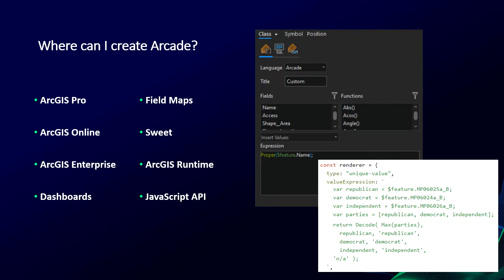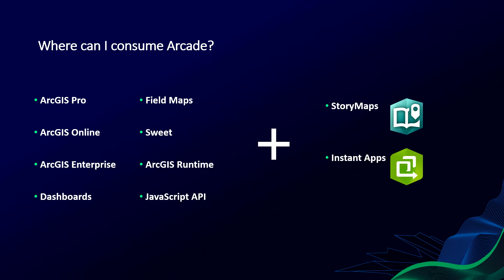Where can I create Arcade? You can create Arcade in lots of different places: through desktop in ArcGIS Pro, through a browser in the map viewer available with ArcGIS Online and Enterprise, through ArcGIS applications like Dashboards, Field Maps, and Survey123, and also in our ArcGIS developer tools like the Runtime and JavaScript API. Where can I consume Arcade? That Arcade you've created in these products can also be consumed in them, and in addition in other ArcGIS applications like Story Maps or Instant Apps. Arcade being portable and accessible in all of these locations essentially means you can create your Arcade script once and it's available everywhere.